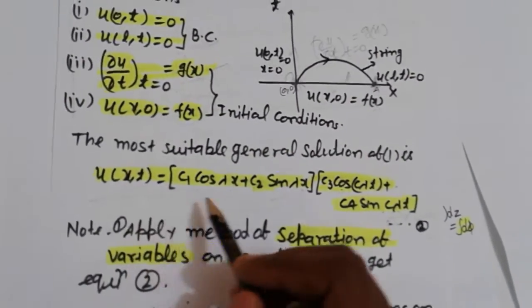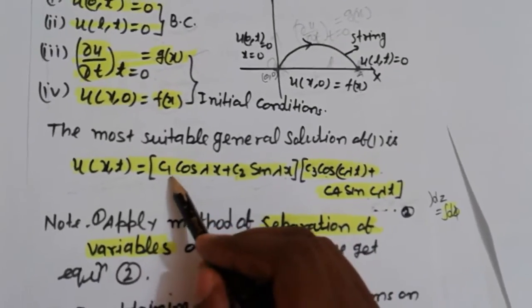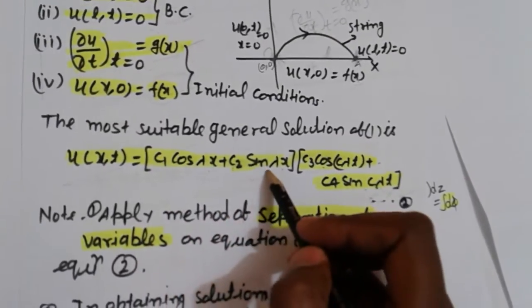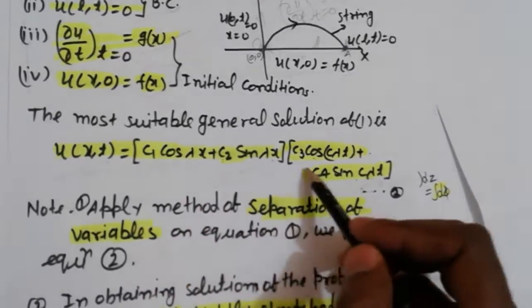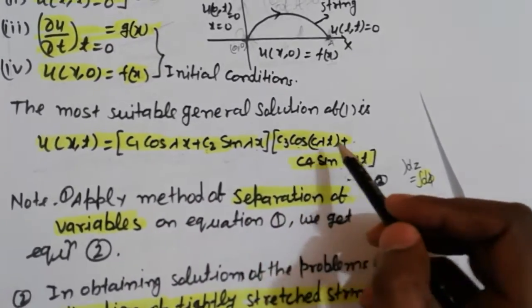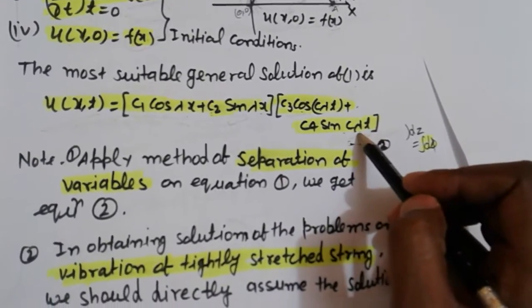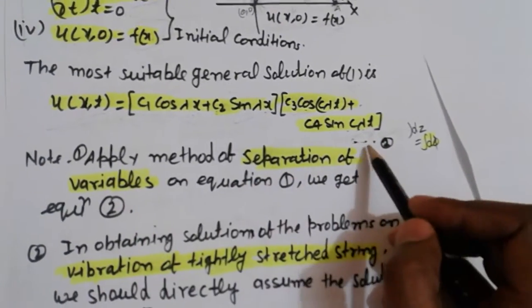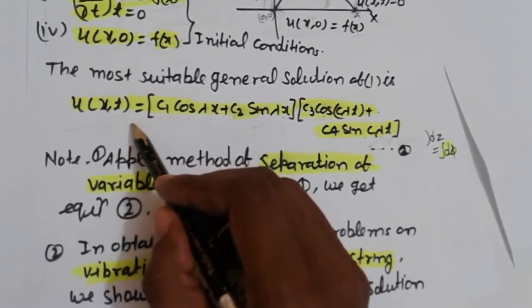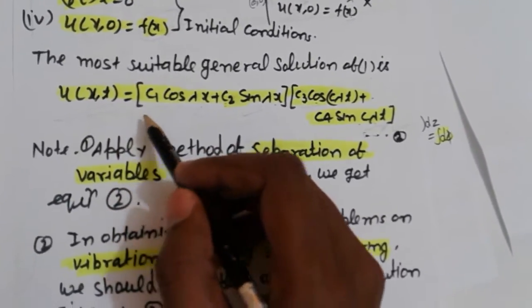u(x,t) = [c₁cos(λx) + c₂sin(λx)][c₃cos(cλt) + c₄sin(cλt)], equation 2, where u(x,t) is displacement at any time t.